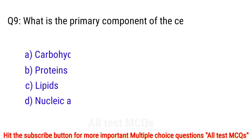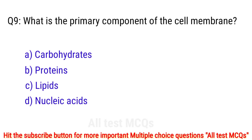Question number 9. What is the primary component of the cell membrane? The right answer is option C: lipids.